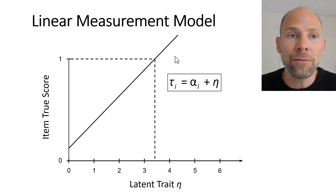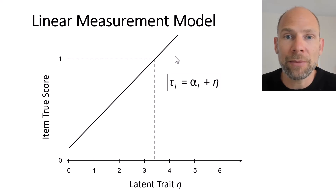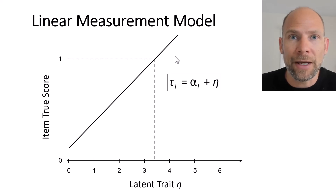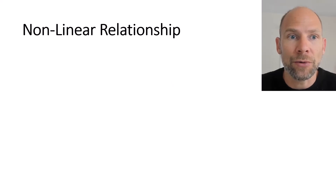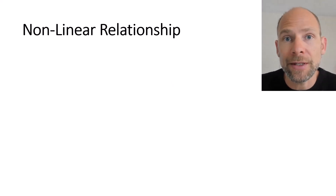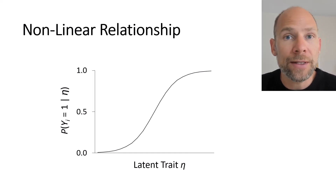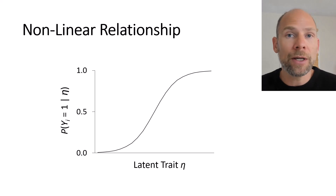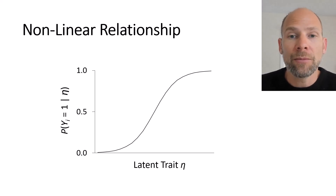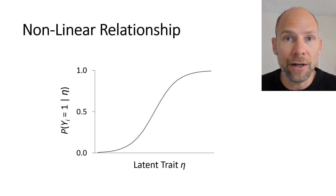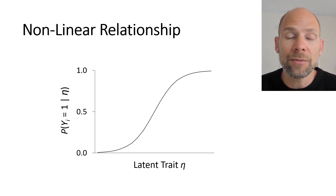So how do we get away from this linear measurement model that is not useful when the outcome variable is bound between zero and one? In item response theory, this is addressed by using a non-linear measurement model instead. A very commonly used IRT model uses an S-shaped function to relate the continuous latent trait variable to the item score. On the x-axis we again have latent trait eta, and on the y-axis we have the probability of solving the item.